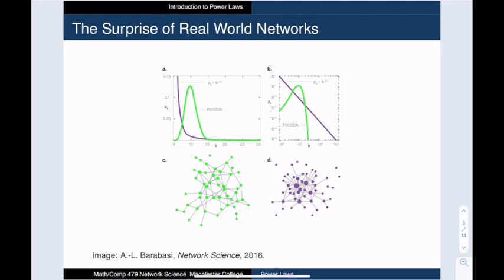For this purple degree distribution, the vast majority of vertices have degrees that are very small. Meanwhile, there are some very high degree vertices in comparison with the others.